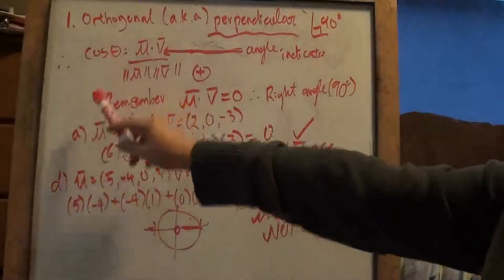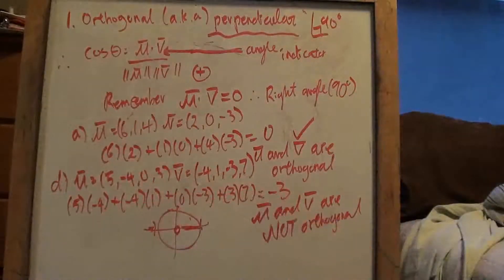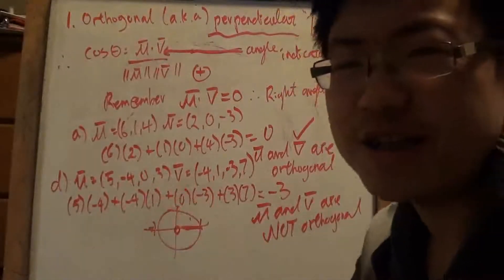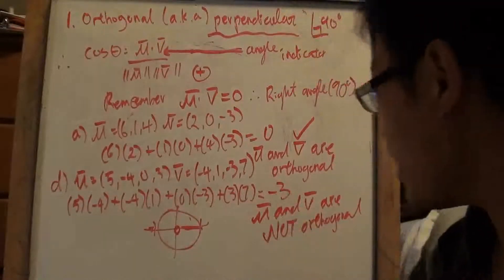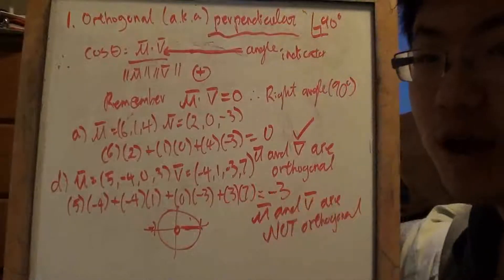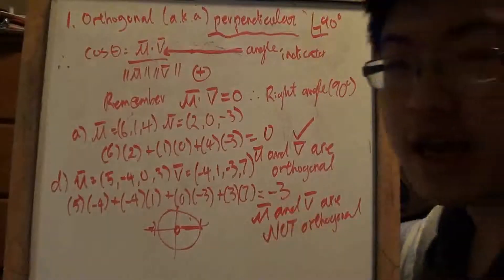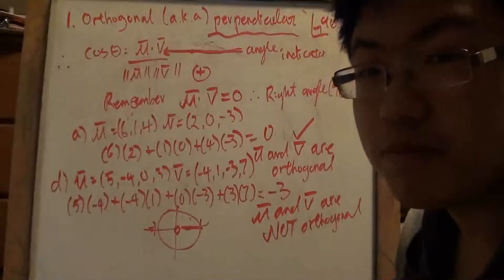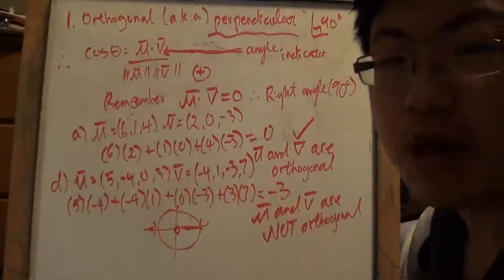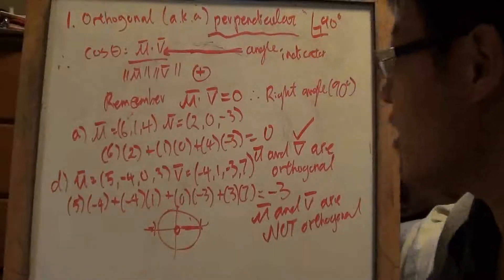In other situations, for example question D, we have these vectors and we do the same thing. It's just negative 3, which does not equal 0, so they are not orthogonal. Here's a quick review question: what angle is it if it's not a right angle? Since the dot product is negative, it must be an obtuse angle. So be prepared for questions like that.